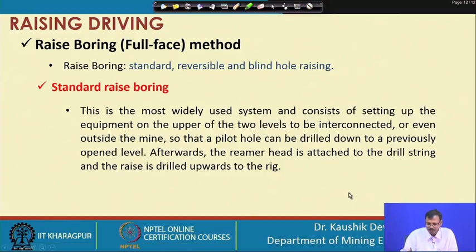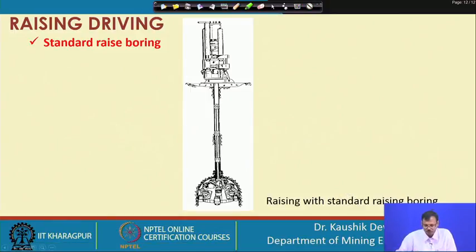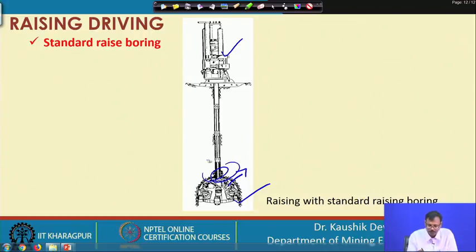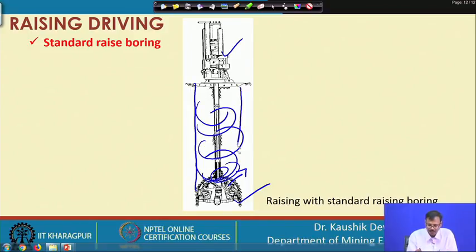In the photograph, you can see: the machine is in the upper level, the pilot hole has been created to the lower level, the reaming head is at the lower level, and the reaming head is pulled in the upward direction. Gradually it rims the material and finally achieves a raise of the desired dimension.